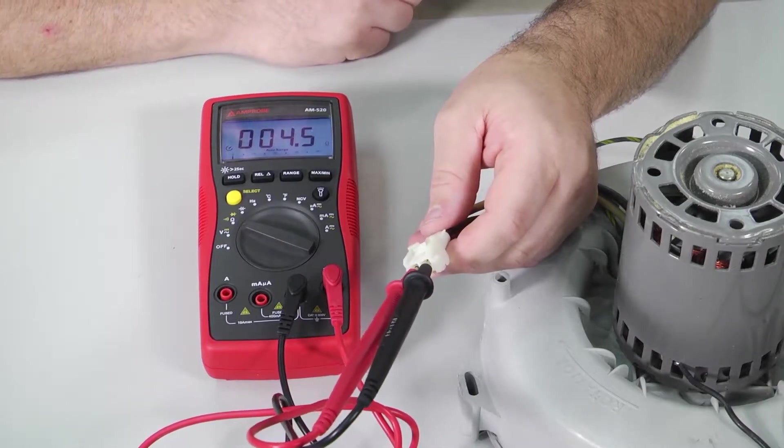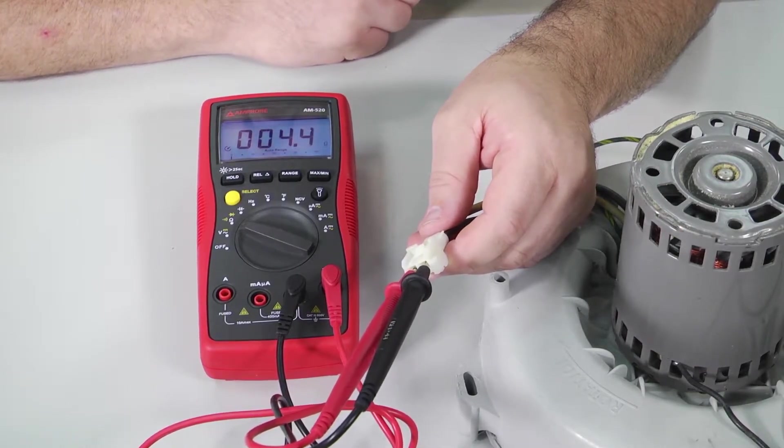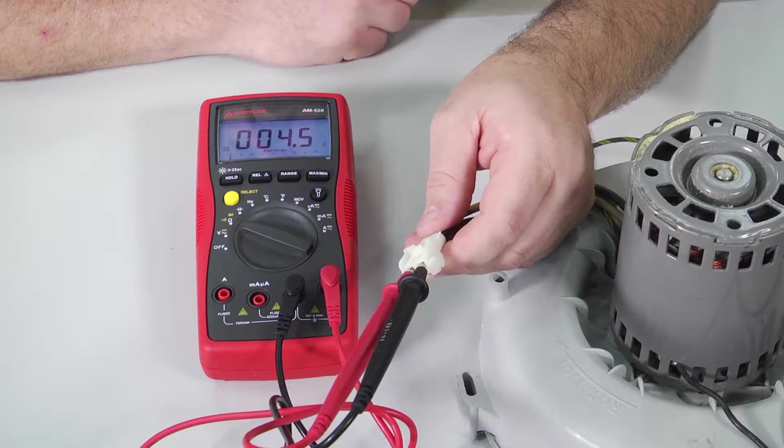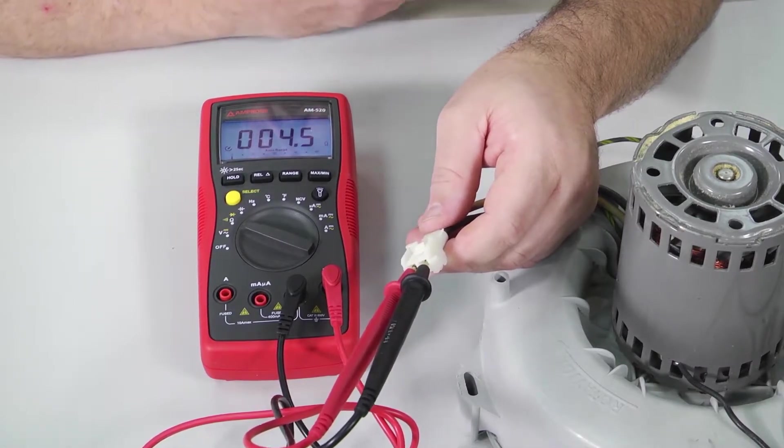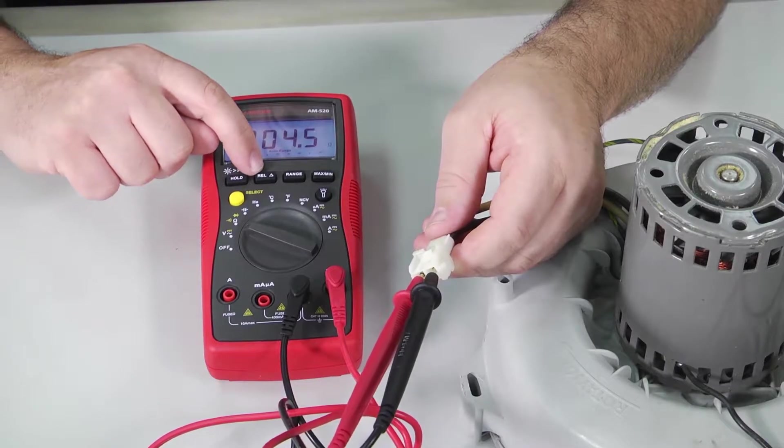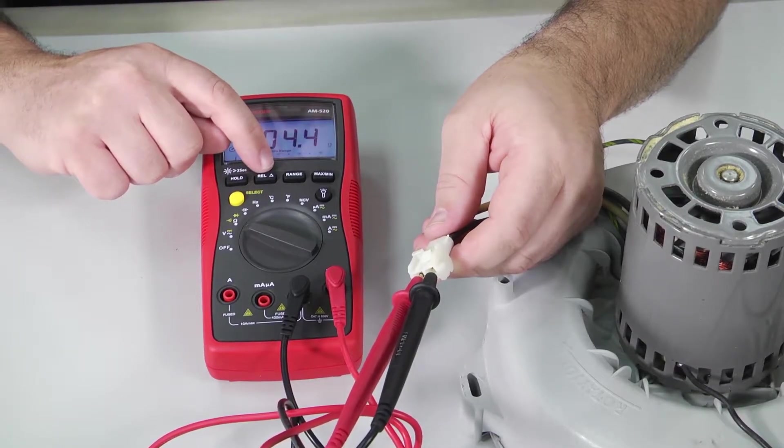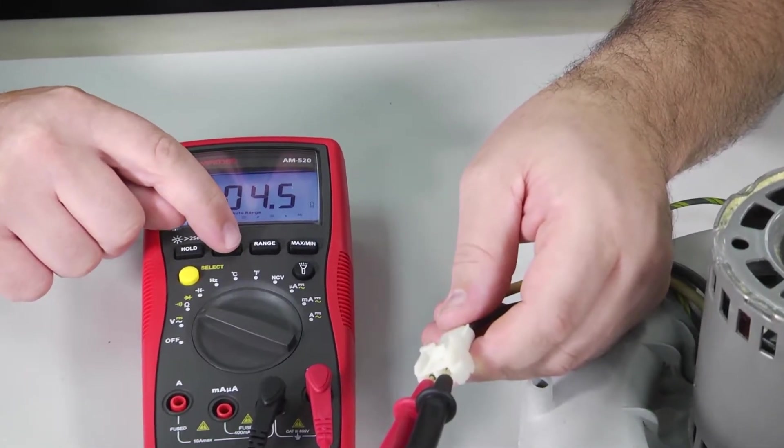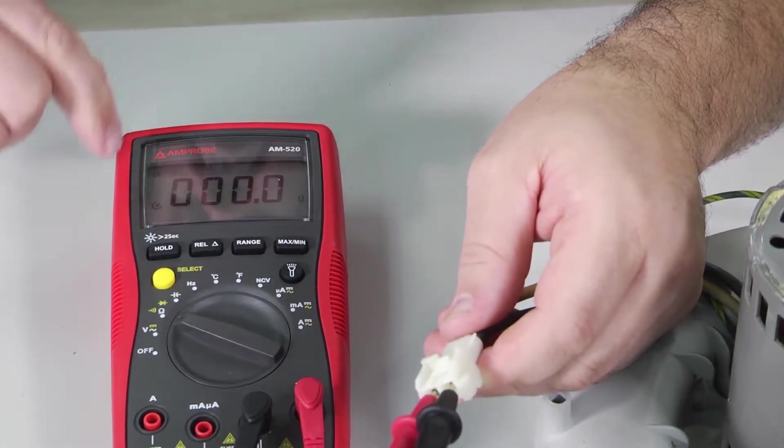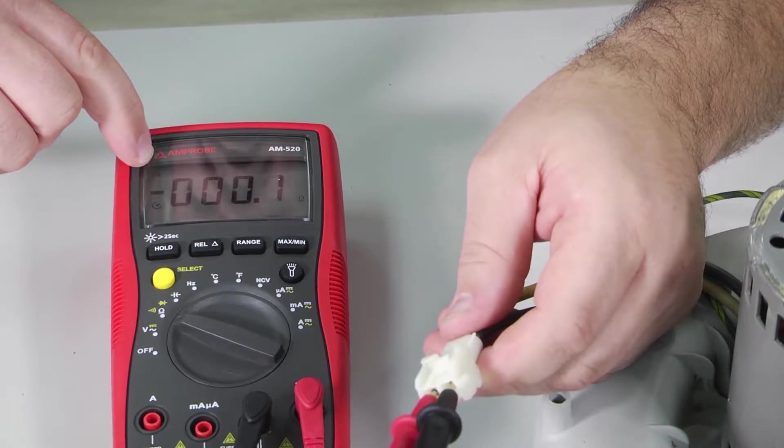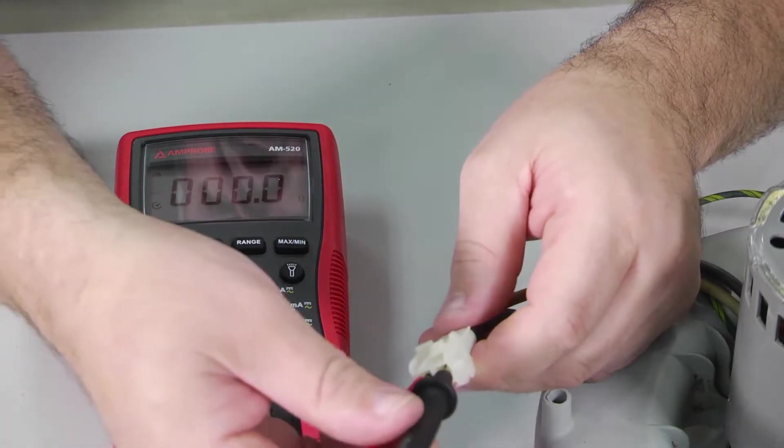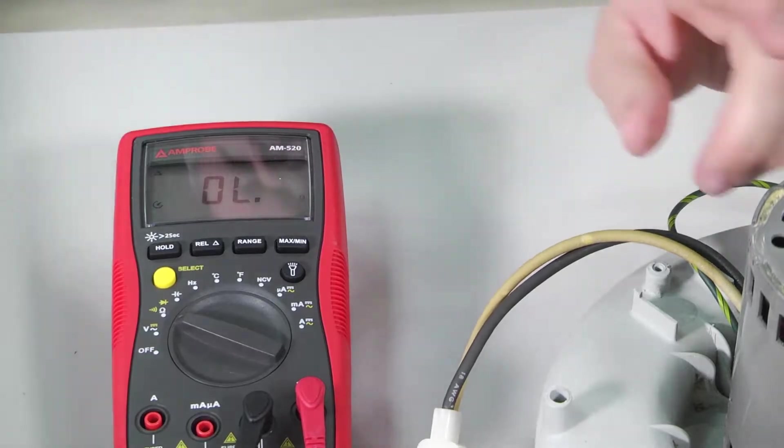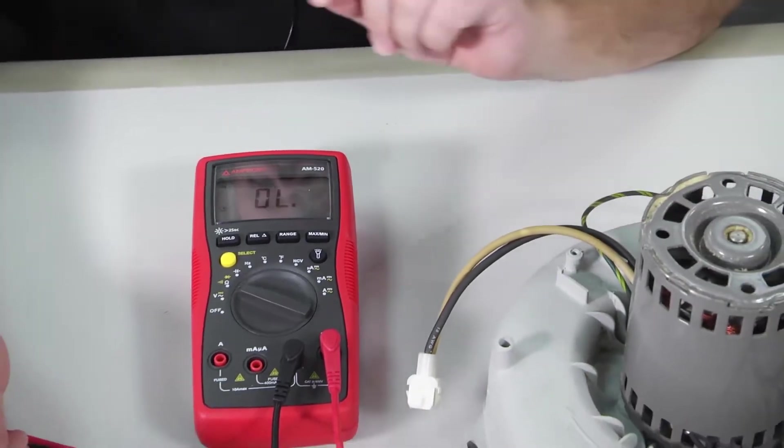And it sees that we're running about 4.5 ohms of resistance. Now I think this is a pretty cool feature that comes in handy. You see a button right here relative and a delta symbol, so that means difference, the Greek symbol for delta. I can hit this button now. The delta symbol appears in the upper corner of the meter. And now everything else I check the ohms value on will be relative to this initial reading.